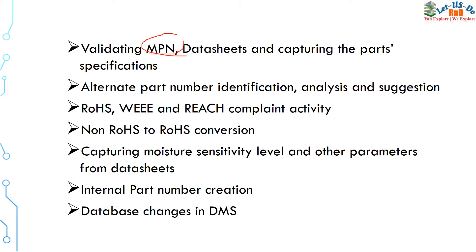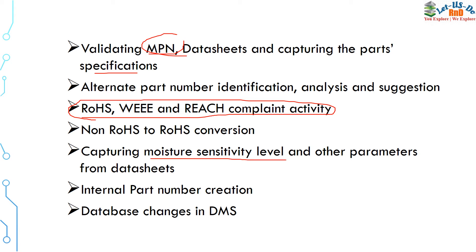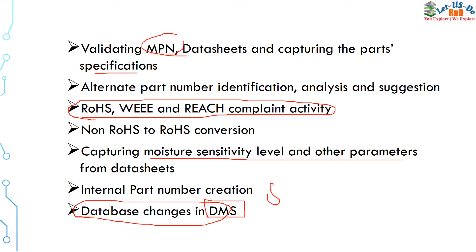There are some more responsibilities like validating manufacturer part numbers, capturing data sheet part specifications, environmental compliance draws, and capturing moisture sensitivity level. Many other parameters are given in data sheets. In database management, changes are made in the DMS — database management system — which can be your SAP system or other database management systems available in the market.